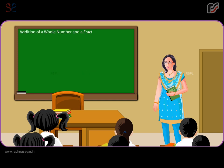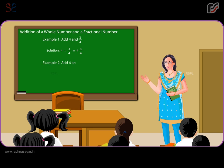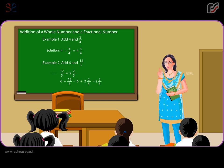Addition of a whole number and a fractional number. Example 1: Add 4 and 3 by 4. 4 plus 3 by 4 equals 4 and 3 by 4. Example 2: Add 6 and 12 by 5. 12 by 5 equals 2 and 2 by 5, so 6 plus 2 and 2 by 5 equals 8 and 2 by 5.